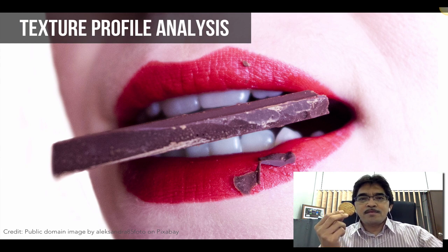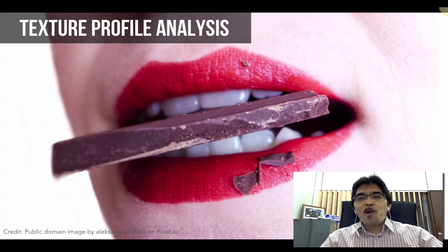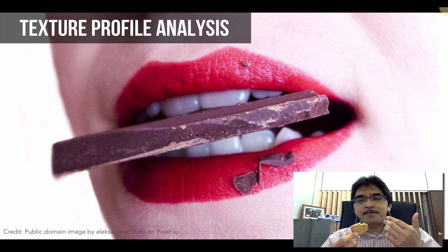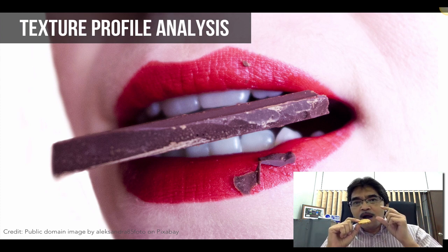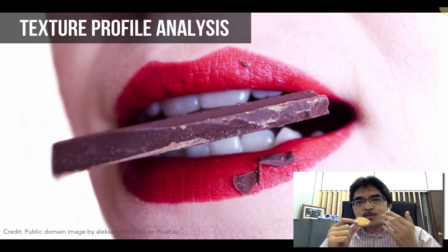What happens when you eat food? When you put a cookie in your mouth and bite, you can sense how crispy, brittle, hard, or soft the food is. When you bite, you apply an external force through your teeth, and that force starts to break down the structure of the food, causing it to disintegrate.